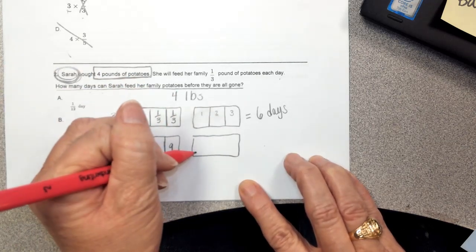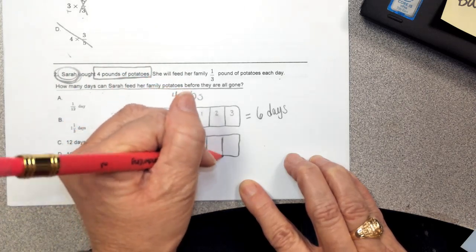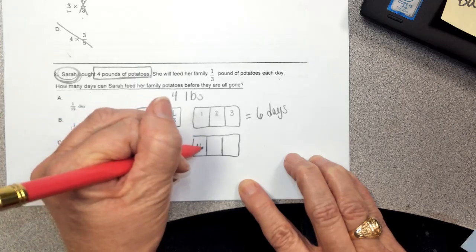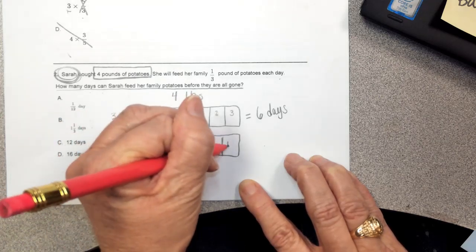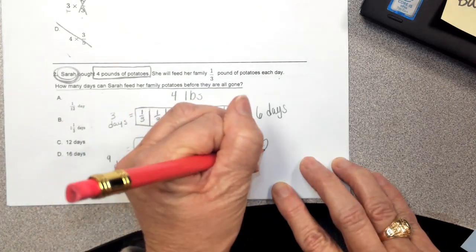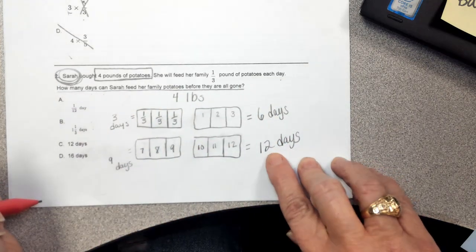And I'm going to go to my last model and I'm going to cut it into thirds as well. So this would be picking up with the days: day 10, day 11, and day 12. So how many days can I feed my family? I can feed my family 12 days.